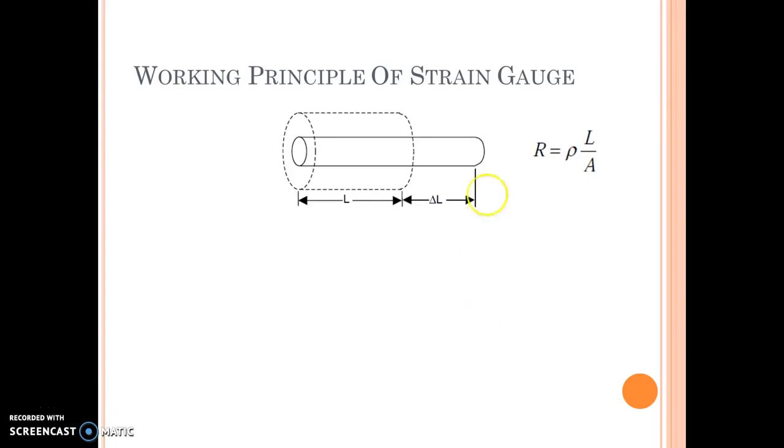Continuing with the working principle, we know that this was the original length. We have applied a force and now the length is L plus delta L. We are also aware of this formula: R equals rho L by A. Now, if we are interested in finding by how much the resistance has changed, we need to find the derivative of this rho L by A.